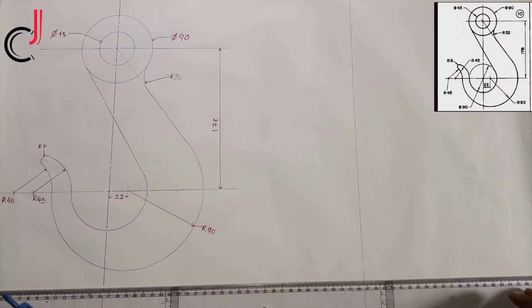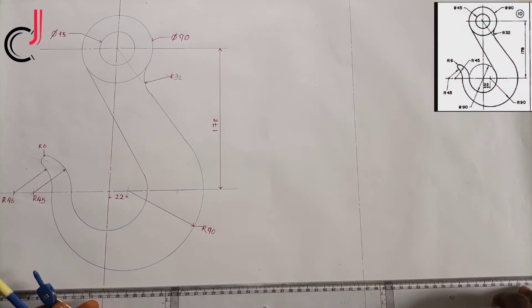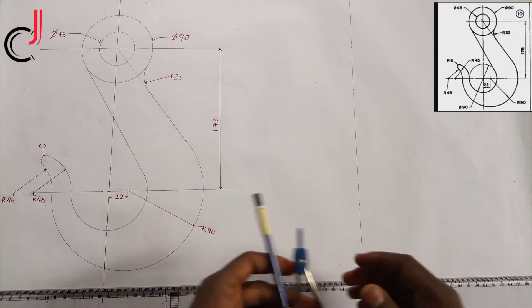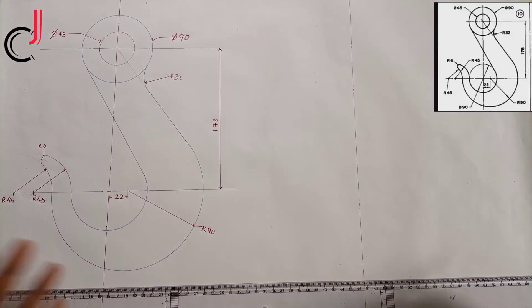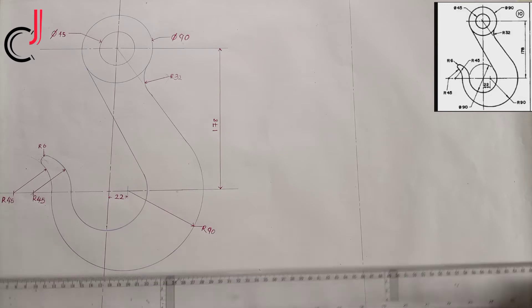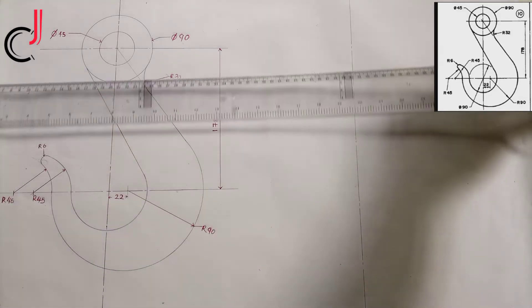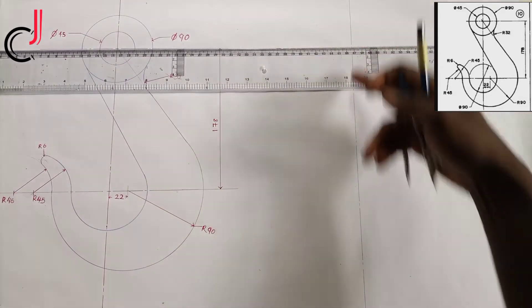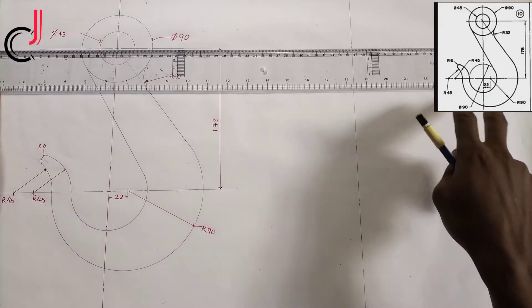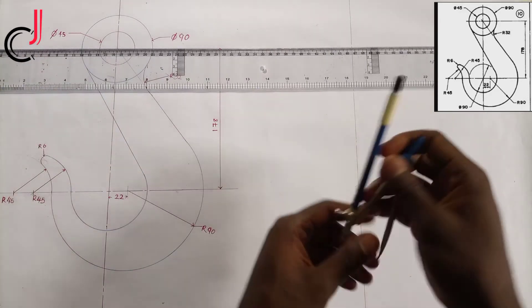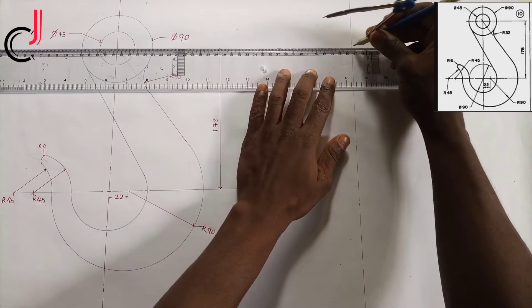Hello guys, today we'll be constructing a crane hook using the principle of tangency. To start, remove your T-square — we've used the liberty to construct a vertical line already. Use a T-square and then indicate a center line over here.